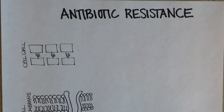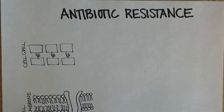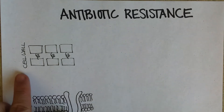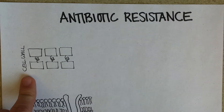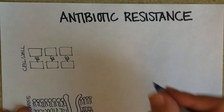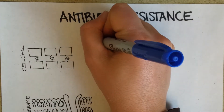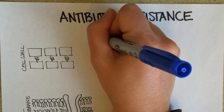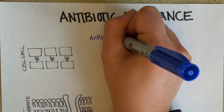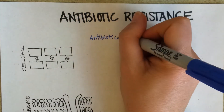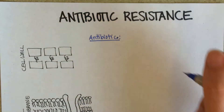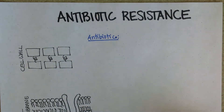On this page we'll look at some different ways that bacteria can be resistant to antibiotics. The first example we'll look at is antibiotics that affect or inhibit cell wall formation, and the example we'll use is vancomycin resistance.